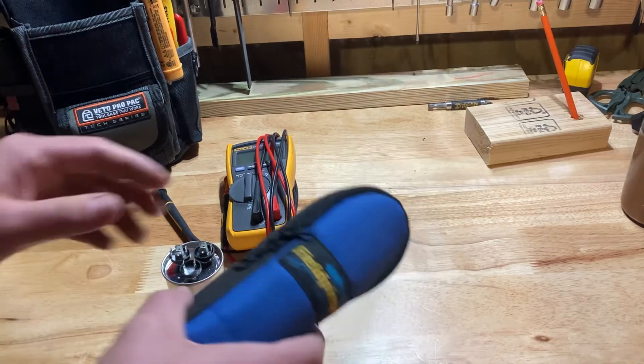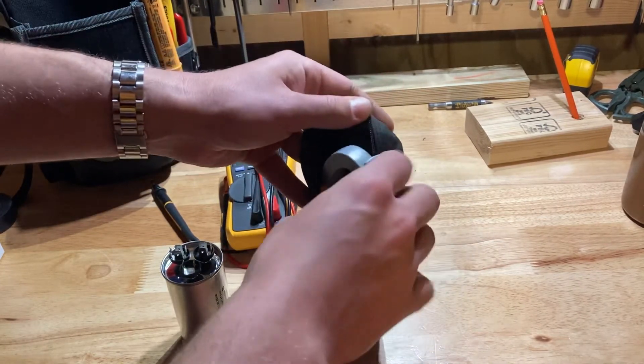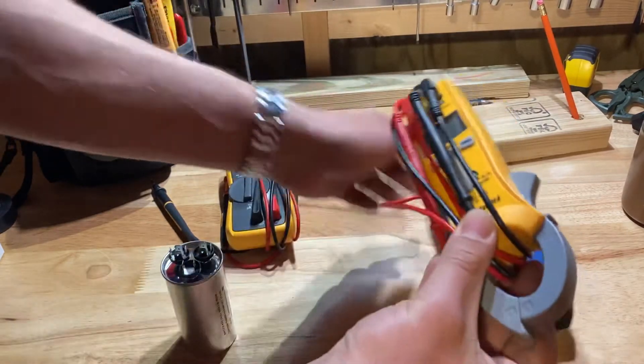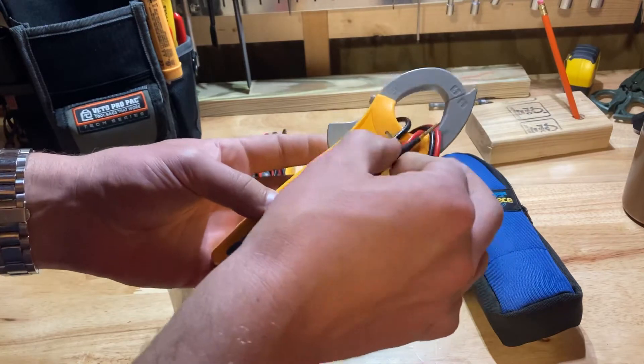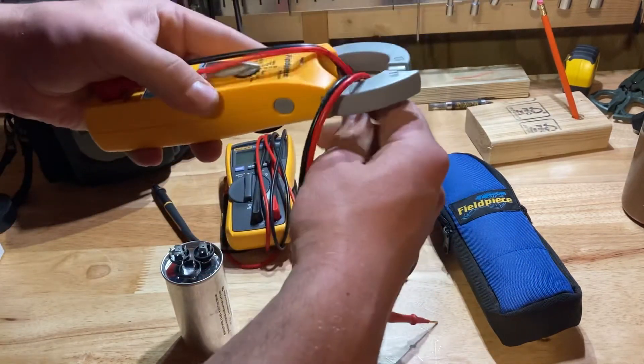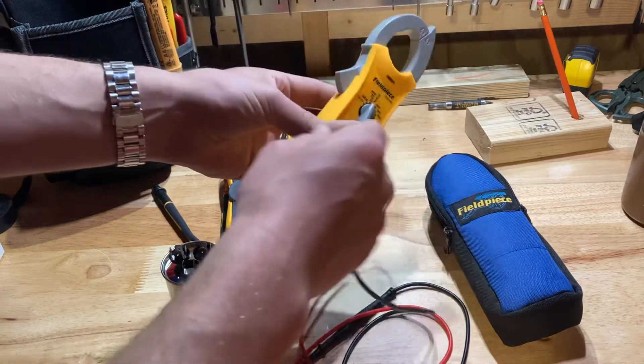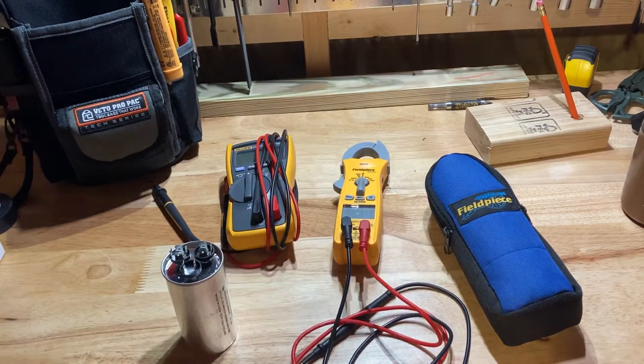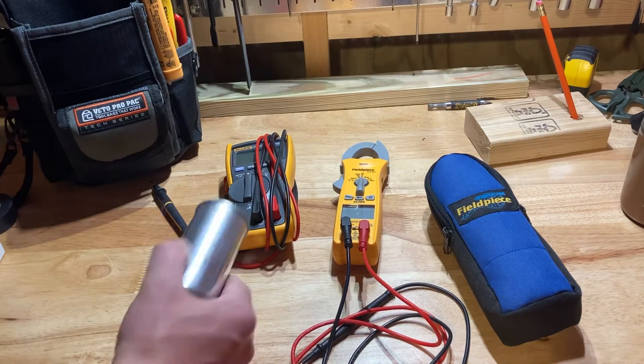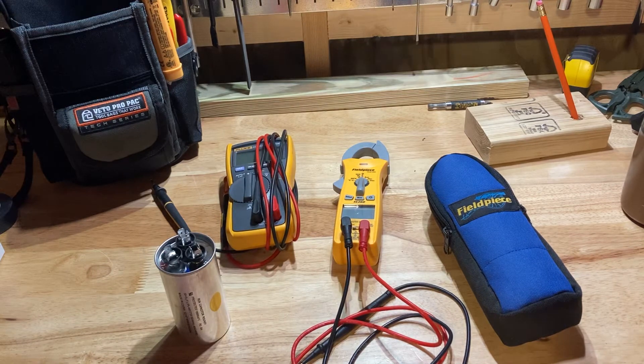The Fieldpiece is good. It is a little cheaper than the Fluke. They make expensive Fieldpieces, this is one of the cheapest ones, but this was a good meter for me. It still is. It's good for checking to make sure you've got power and make sure the power's off. Where I ran into trouble with it was testing capacitors and some other stuff like ohms.